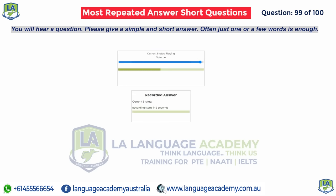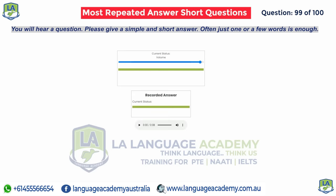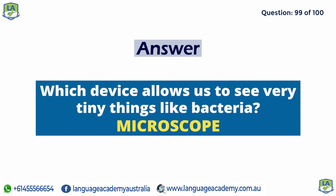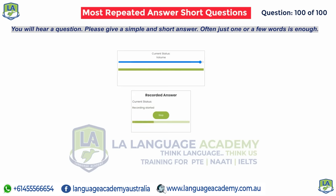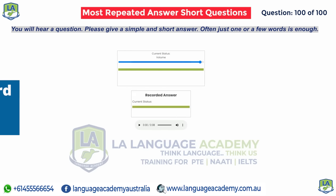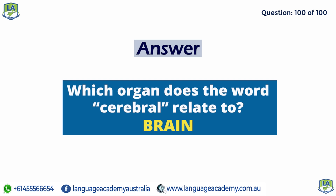Which device allows us to see very tiny things like bacteria? Microscope. Which organ does the word cerebral relate to? Brain.